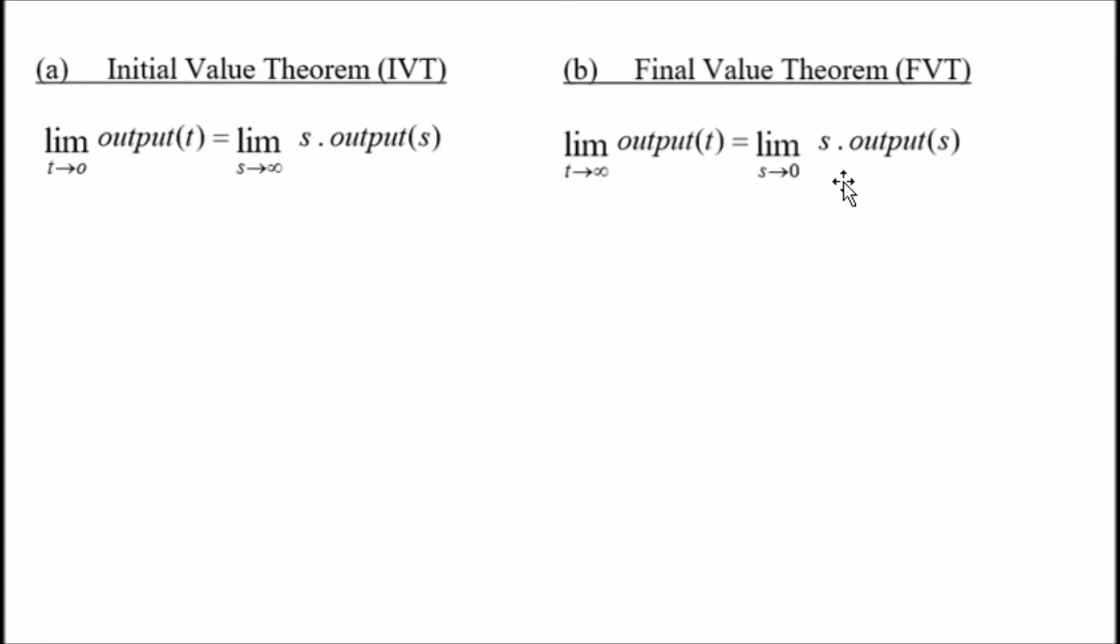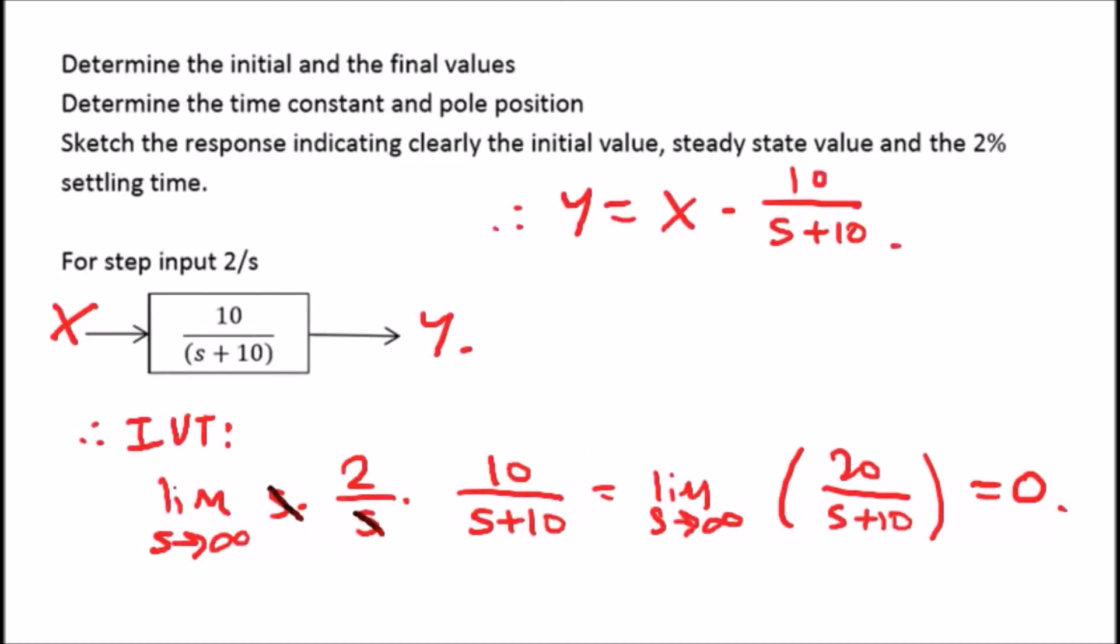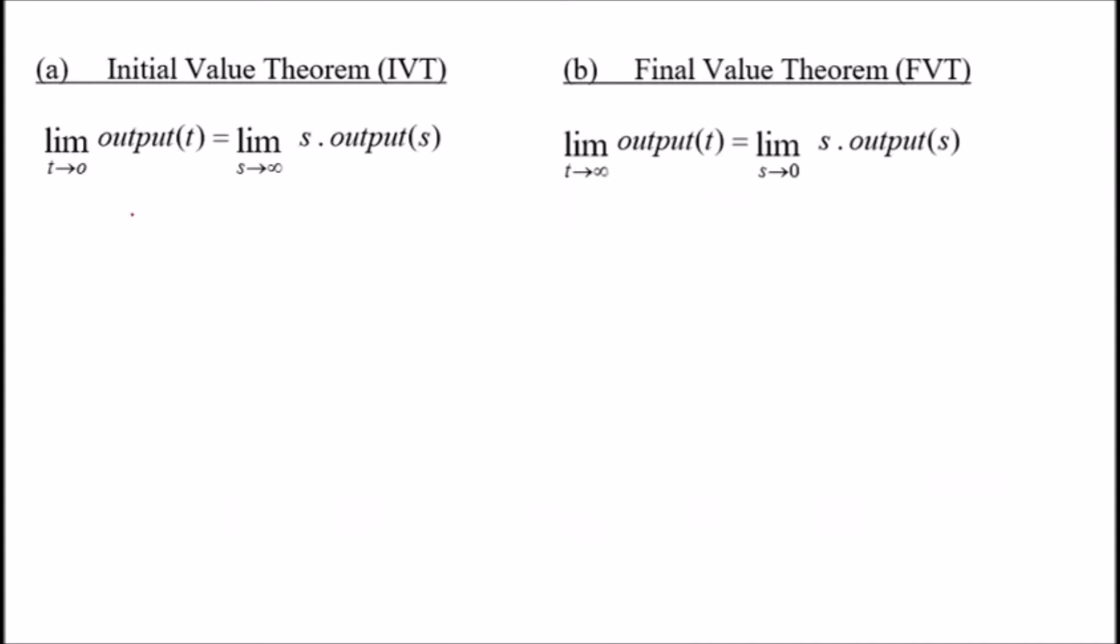Now how about the final value? This tells us we need to take the limit as s approaches zero for the same function. So the limit as s approaches zero of the same function, 20 over s plus 10. Literally just plug in zero for s, so we're left with 20 over 10, which is the same as 2. We've found our final value.